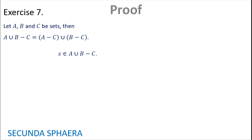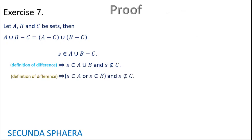Starting: S is in A union (B without C). Using the definition of difference of sets, this is S is in (A union B) and S is not in C. Now using the definition of union of sets, S is in A or S is in B, everything as a term of the conjunction with S is not in C. The next step is to use the distribution of conjunction, so the second term is distributed: (S is in A and S is not in C) or (S is in B and S is not in C).